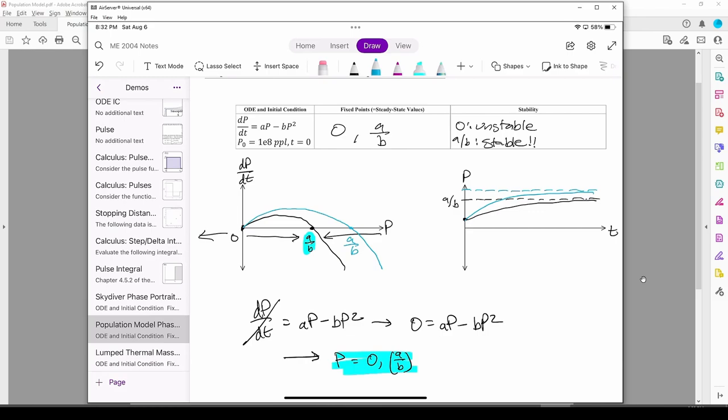On the other hand, as we increase b, the fixed point slides to the left on the phase portrait, and the population will stabilize to some lower steady state value. This makes sense because an increase in b, the death rate, lowers the population.